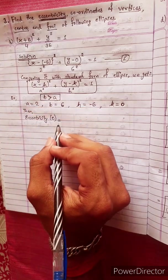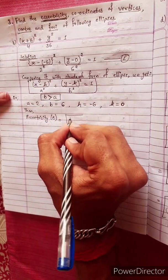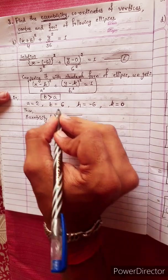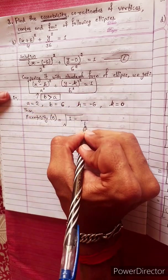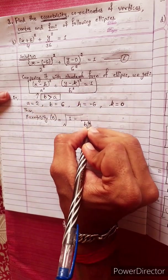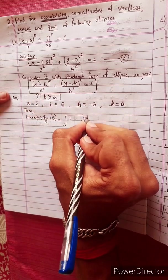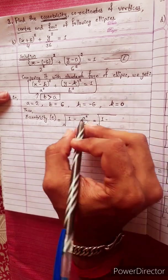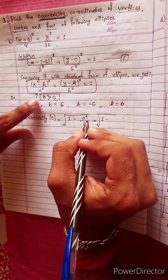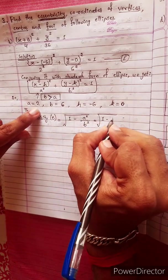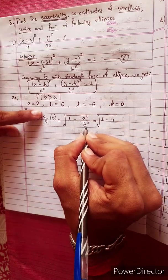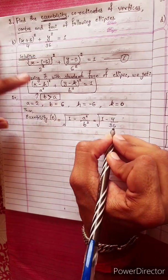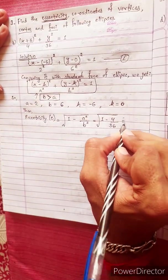Since b is greater than a, b is the larger value. The eccentricity formula is e equals under root of 1 minus a² over b². Here a² equals 4 and b² equals 36, so we compute under root of 1 minus 4 over 36.